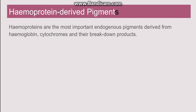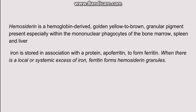Now going to a very important category — hemoprotein-derived pigments. These are endogenous pigments derived from hemoglobin or their breakdown products. An important one is hemosiderin; another is bilirubin. Hemosiderin is hemoglobin-derived, a golden-yellow to brown granular pigment mostly found in the mononuclear phagocytic cells of the bone marrow, spleen, and liver. It is a storage form of iron.